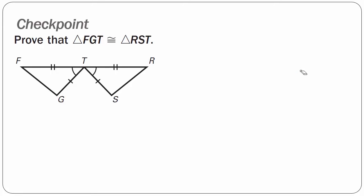Checkpoint problem number one is yours: prove that triangle FGT is congruent to triangle RST. Remember, in order to prove congruence you need at least three pieces of information — either all three sides congruent to all three sides of the other triangle (SSS), or two sides and the included angle congruent to two sides and the included angle of the other triangle (SAS).